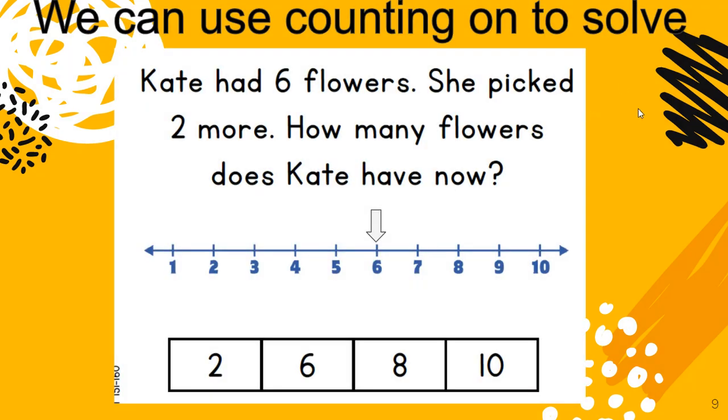We can use counting on to solve problems like this. Kate had 6 flowers. She picked 2 more. How many flowers does Kate have now? So she had 6. So we're going to start counting at 6. And we need to count 2 more. 1, 2. So how many flowers does Kate have? She has 8 flowers. That's counting on. We started at 6 and we went to 8. 6 plus 2 equals 8.